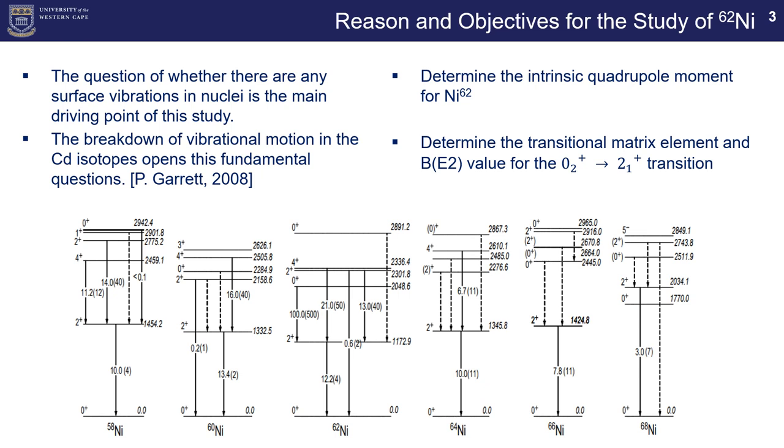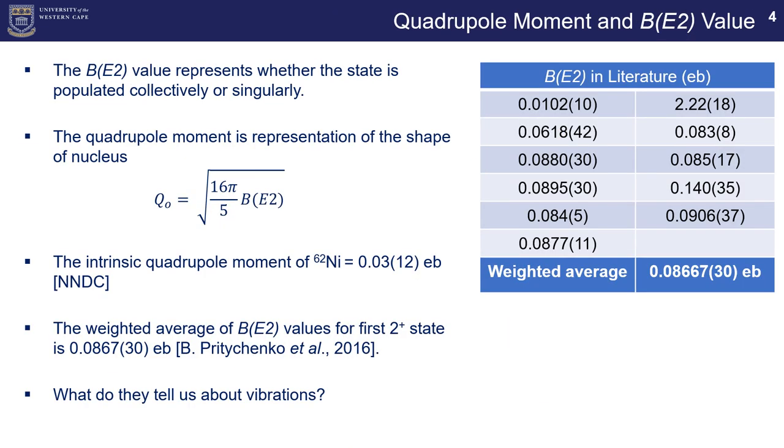In order to do that, we are trying to determine the intrinsic quadrupole moment for nickel 62 and following that we'll also be looking at the second zero plus to the first two plus state and finding the matrix elements and the B(E2) value for this transition.